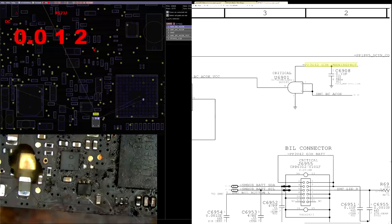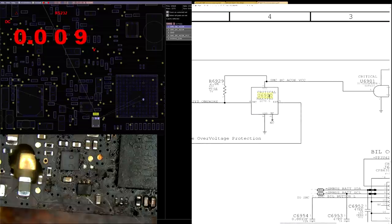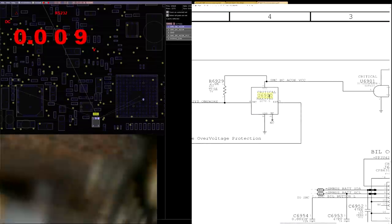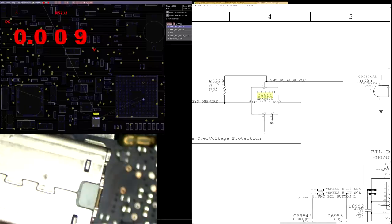What do we got to do now? We got to follow it along. Let's follow it along to U6900. U6900 is going to be on the bottom of the board.